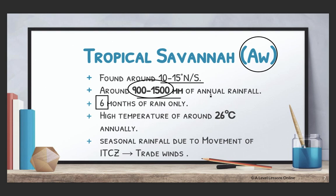Temperature for the AW climate is around 26 degrees Celsius. When ITCZ is in the north hemisphere, there is maximum insolation keeping temperatures high. The seasonal rainfall is largely due to the movement of ITCZ, which brings the trade winds. When the trade winds converge, they bring rainfall — so the movement of ITCZ accounts for this rainfall brought by the trade winds.